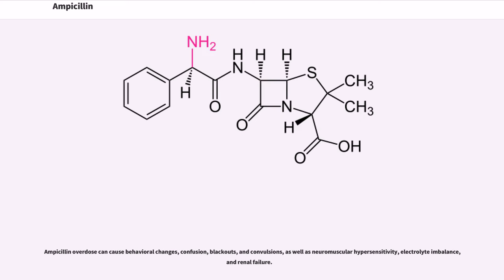Ampicillin overdose can cause behavioral changes, confusion, blackouts, and convulsions, as well as neuromuscular hypersensitivity, electrolyte imbalance, and renal failure.